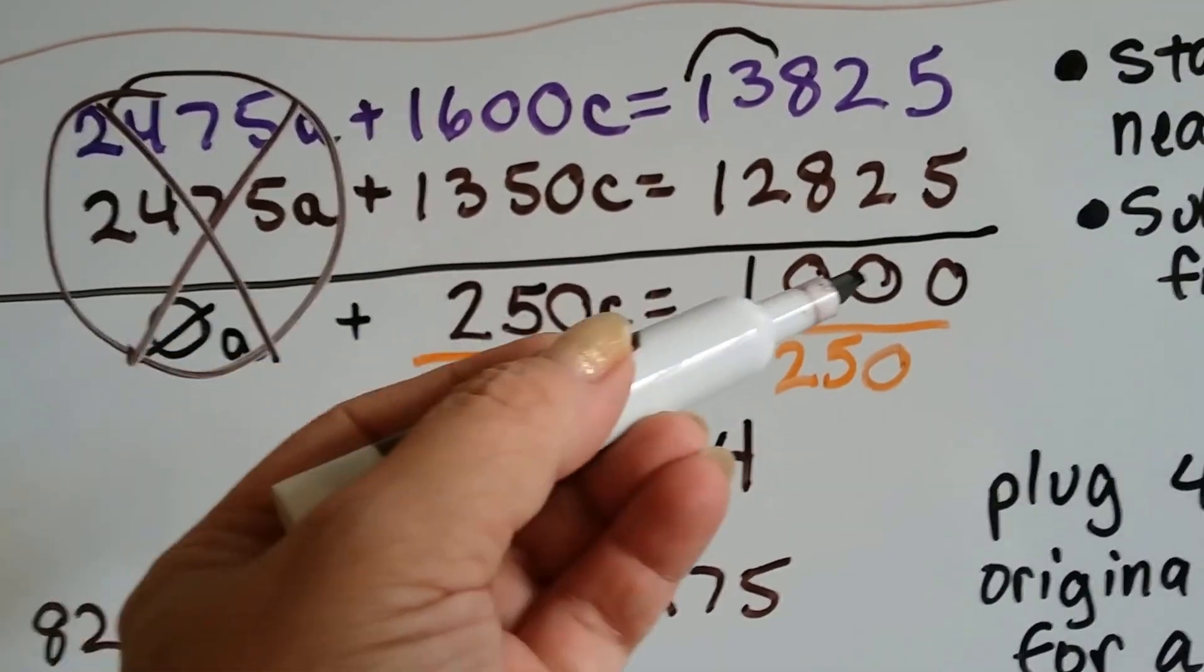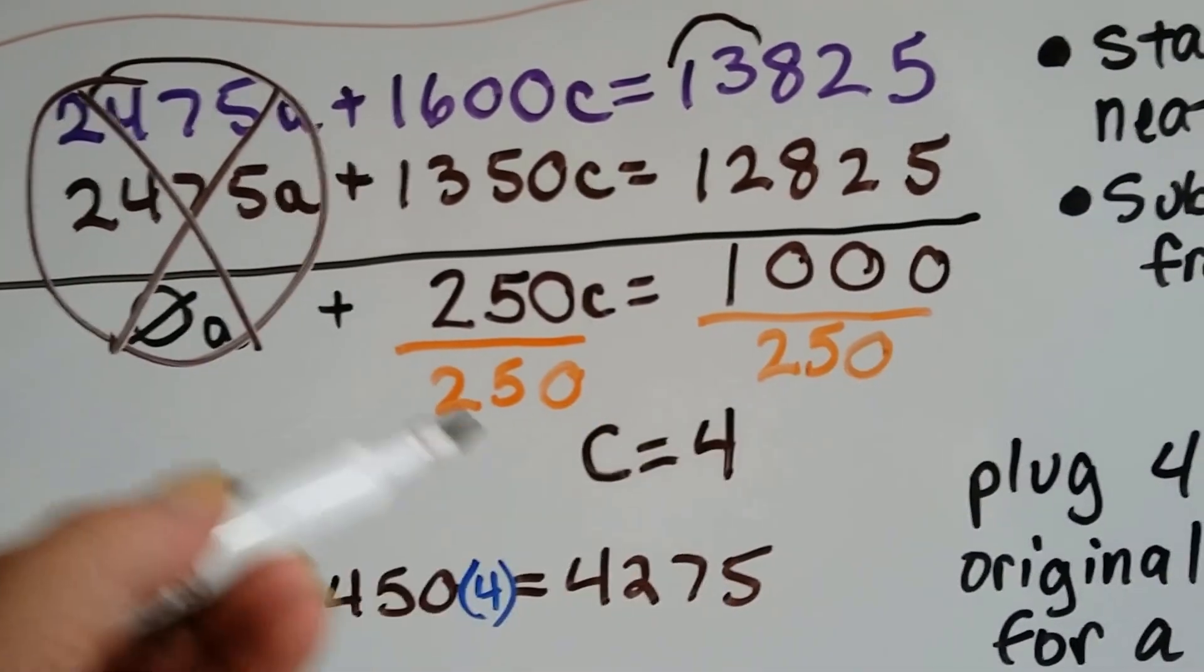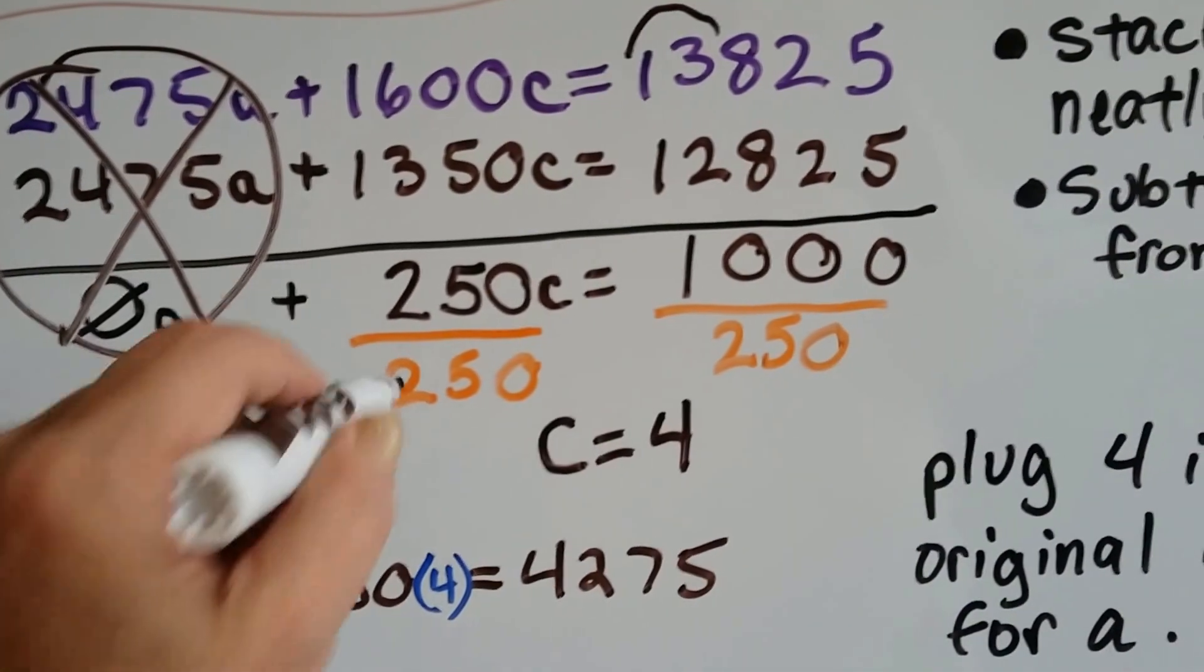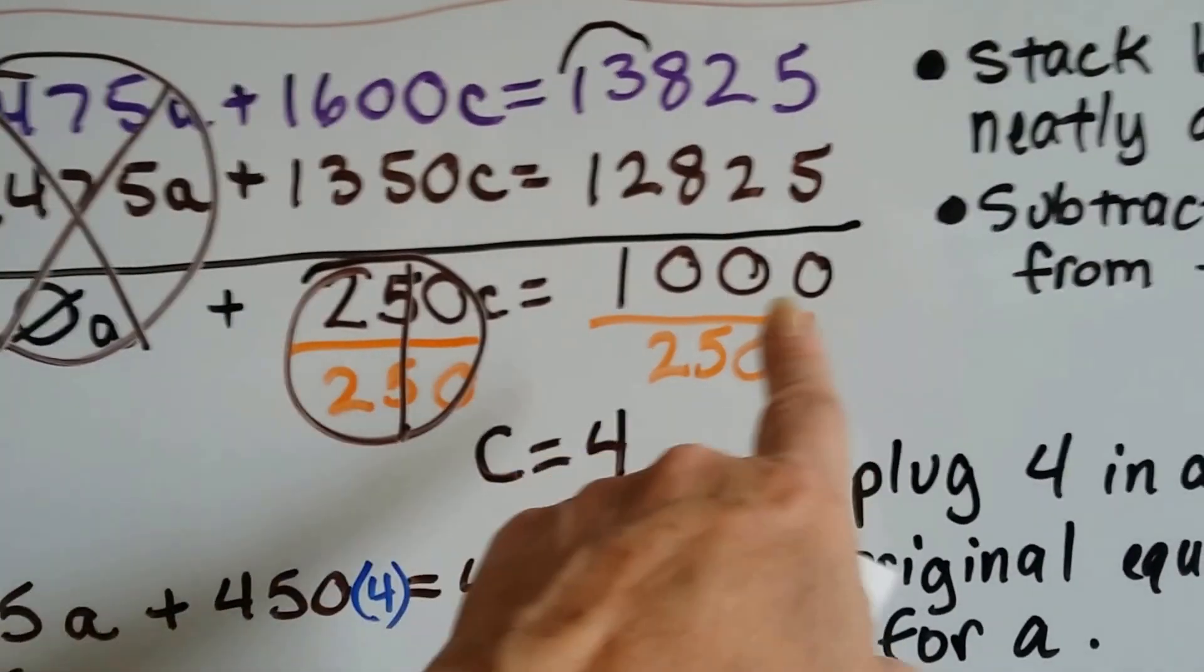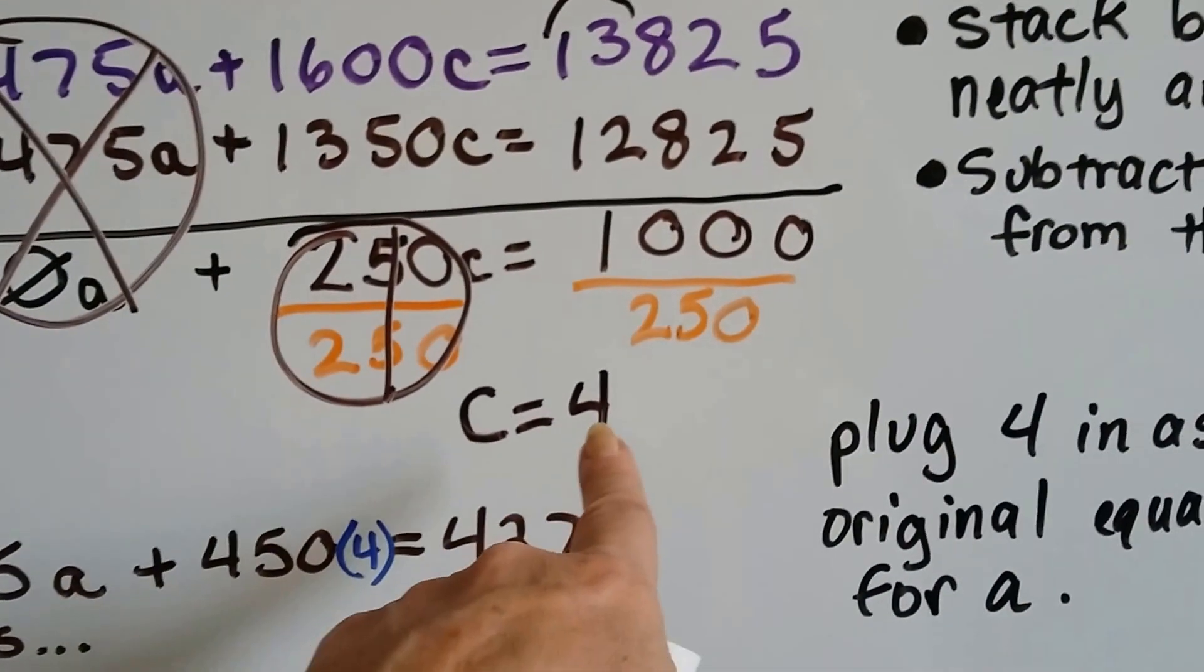Now we've got 250C equals 1000, and we can divide both sides by 250. That'll give us our friend the invisible 1. We've got 1C, and 1000 divided by 250 is 4.